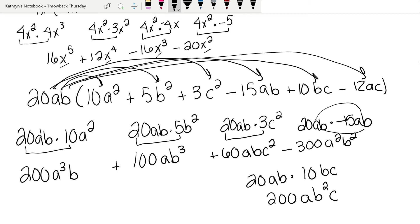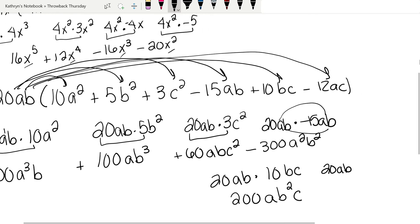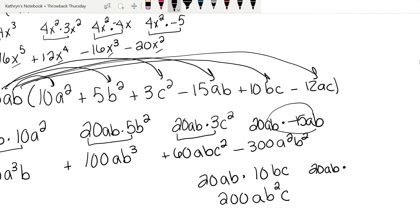And now we're going to have 20ab times negative 12ac. That gives us negative 240. I have two a's, so a²bc.